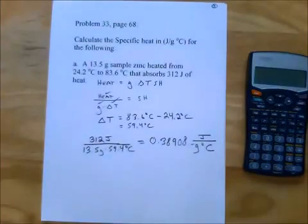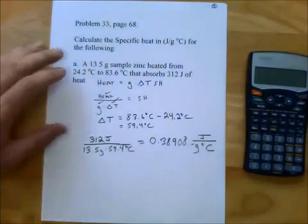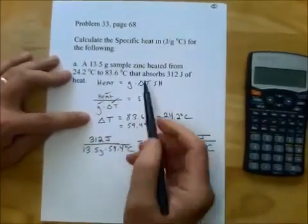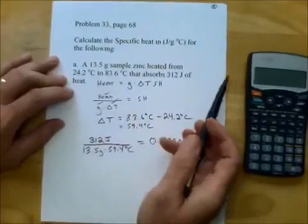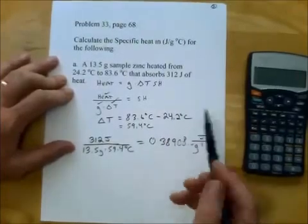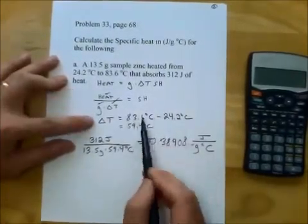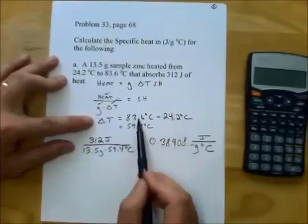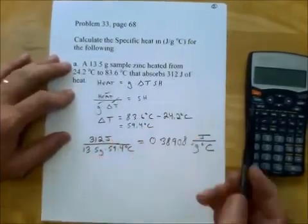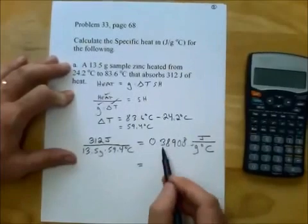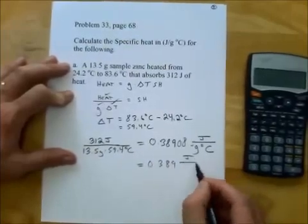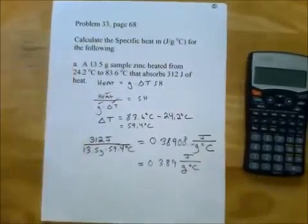As always, we follow up by figuring out how many significant figures to use. Going back to the original problem, we see three significant figures throughout. When we do the subtraction, we should use the same number of decimal places — one decimal place each — so our answer should have three significant figures. That gives us 0.389 joules per gram degrees Celsius, and we're done.